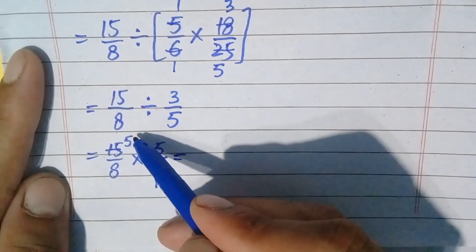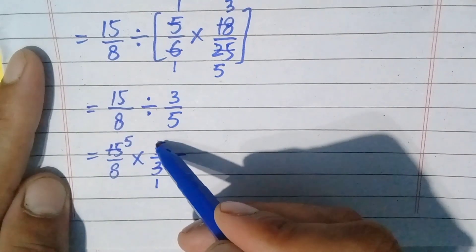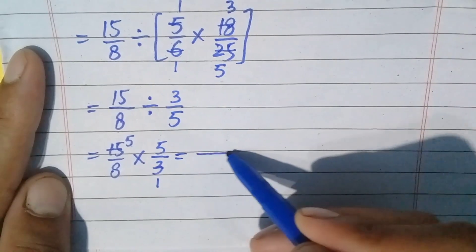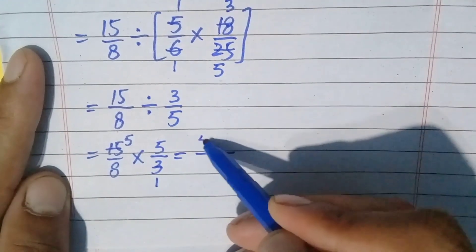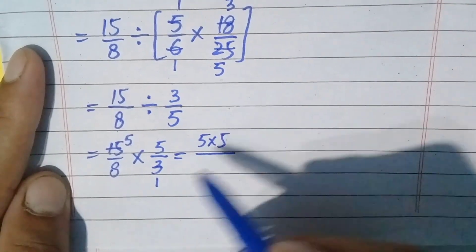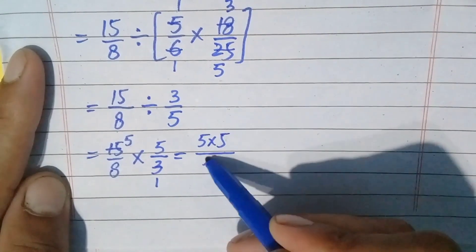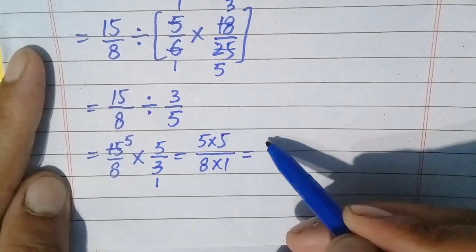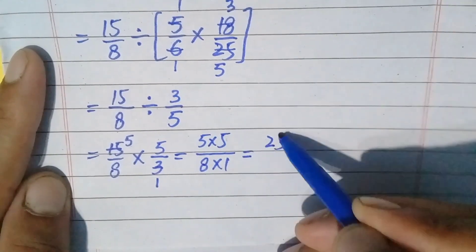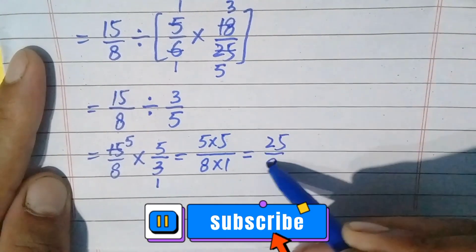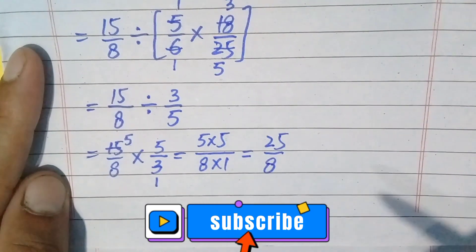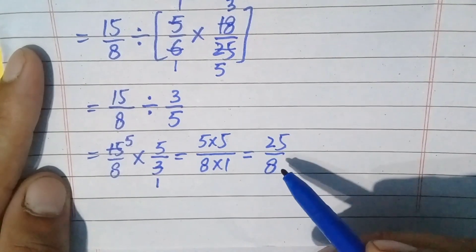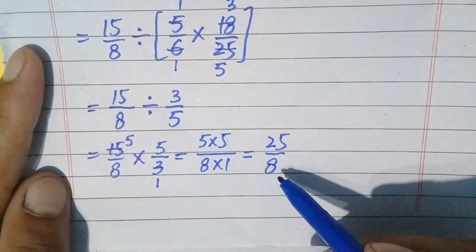In the next step, further simplify this multiplication: numerator multiplied by numerator, denominator multiplied by denominator. So 5 times 5 is 25, and 8 times 1 is 8. Further simplifying: 5 times 5 is 25, and 8 times 1 is 8. My dears, you can see the answer is an improper fraction, so we will convert this improper fraction to a mixed fraction, since the question was given in mixed fraction form.